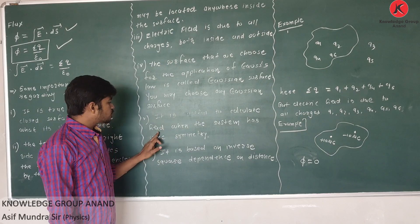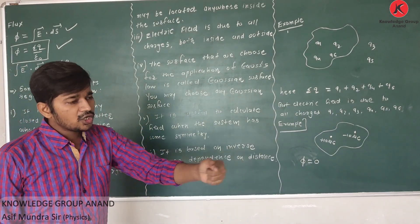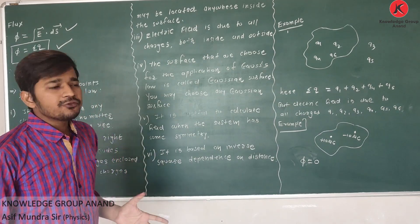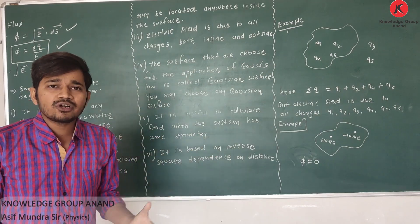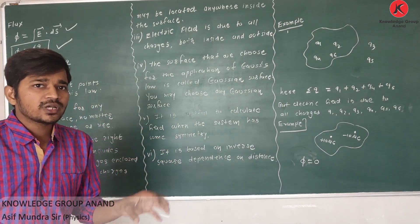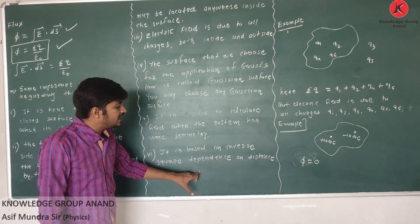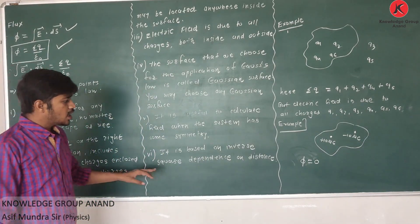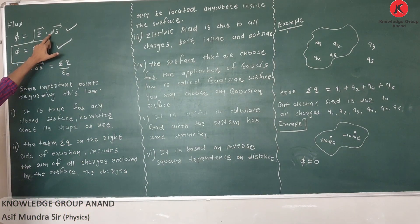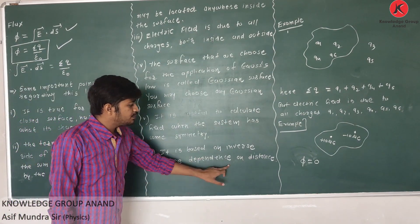Fifth, Gauss's Law is useful to calculate the electric field when the system has some symmetry — for example, a long wire with uniform charge distribution, a cylindrical shape, or a sphere or shell with uniform charge distribution. Such systems have symmetry, and due to the symmetrical charge distribution, you can easily find the electric field using Gauss's Law. Sixth, it is based on the inverse square dependence of electric force on distance.